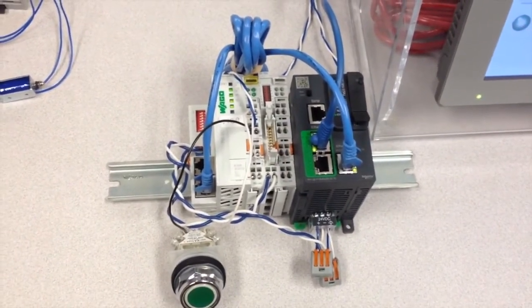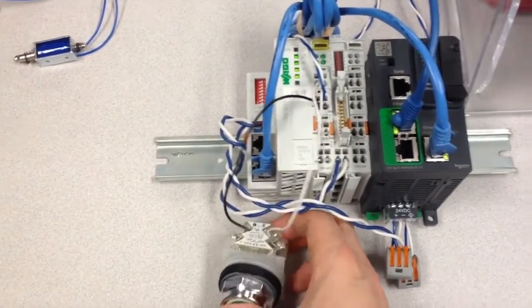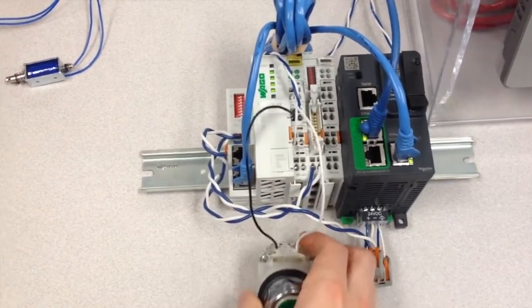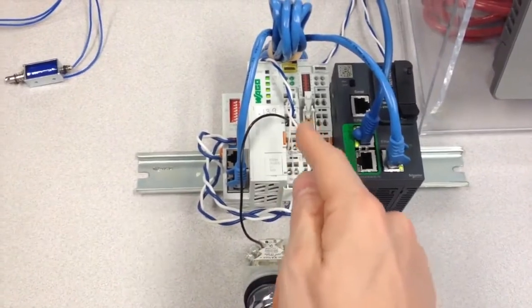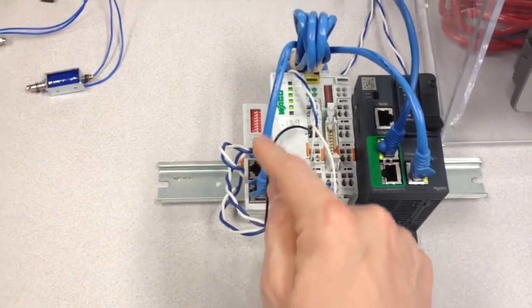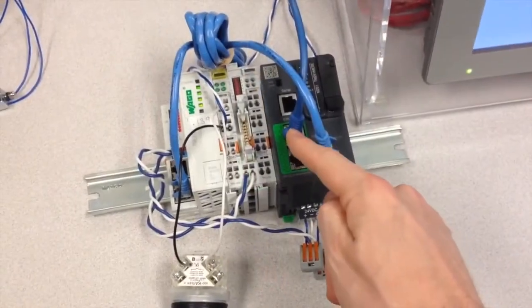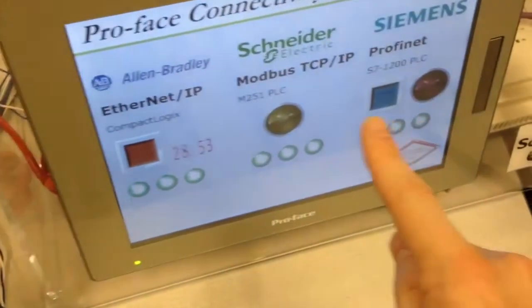On the WAGO PFC we have an input card and that is reading the status from this push button which is connected. Now once I press this push button, the signal will get transmitted digitally through the input card and then it will get transmitted over Modbus TCP into Ethernet 2 on the M251, and then it will get in turn sent out over Modbus TCP to the HMI and turn this lamp on.